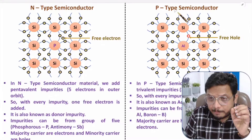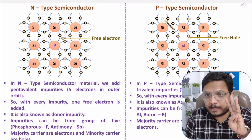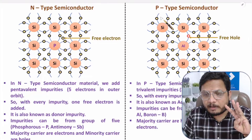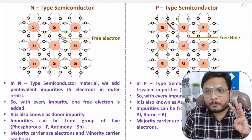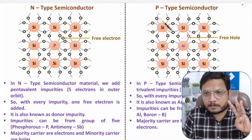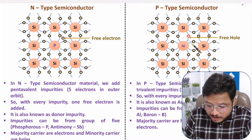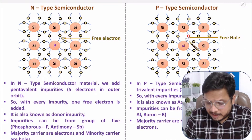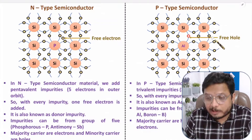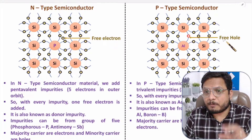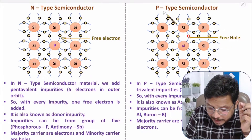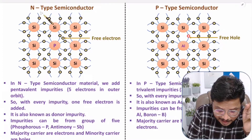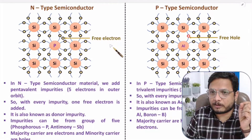In P-type we add trivalent impurities. Trivalent impurities means in the outer orbit we have three electrons. So in the covalent bond structure, one electron is missing — a missing electron means there is a free hole. So the majority charge carrier in P-type is the hole, and the majority charge carrier in N-type is the electron.